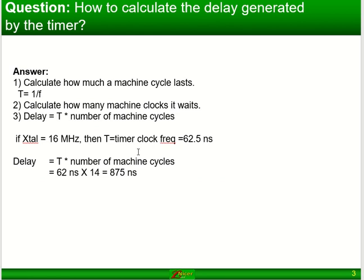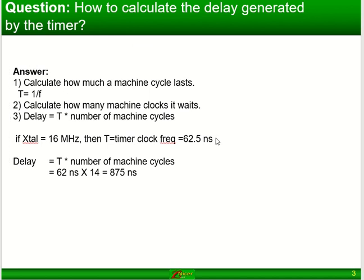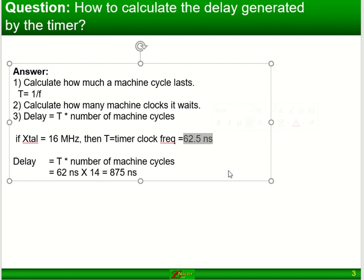Looking at how to calculate the delay generated by the timer, we have to calculate what is your machine cycle. The machine cycle from your crystal is T equals 1 divided by your frequency. As I've said, if the frequency is 16MHz, that boils down to 62.5 nanoseconds time.